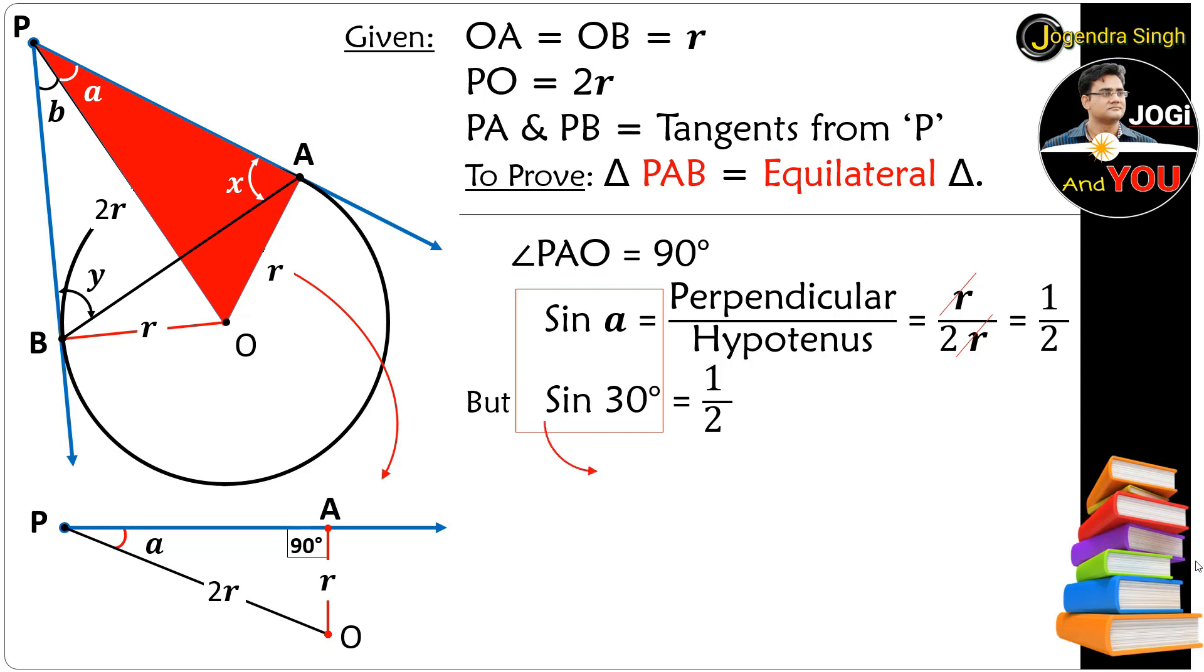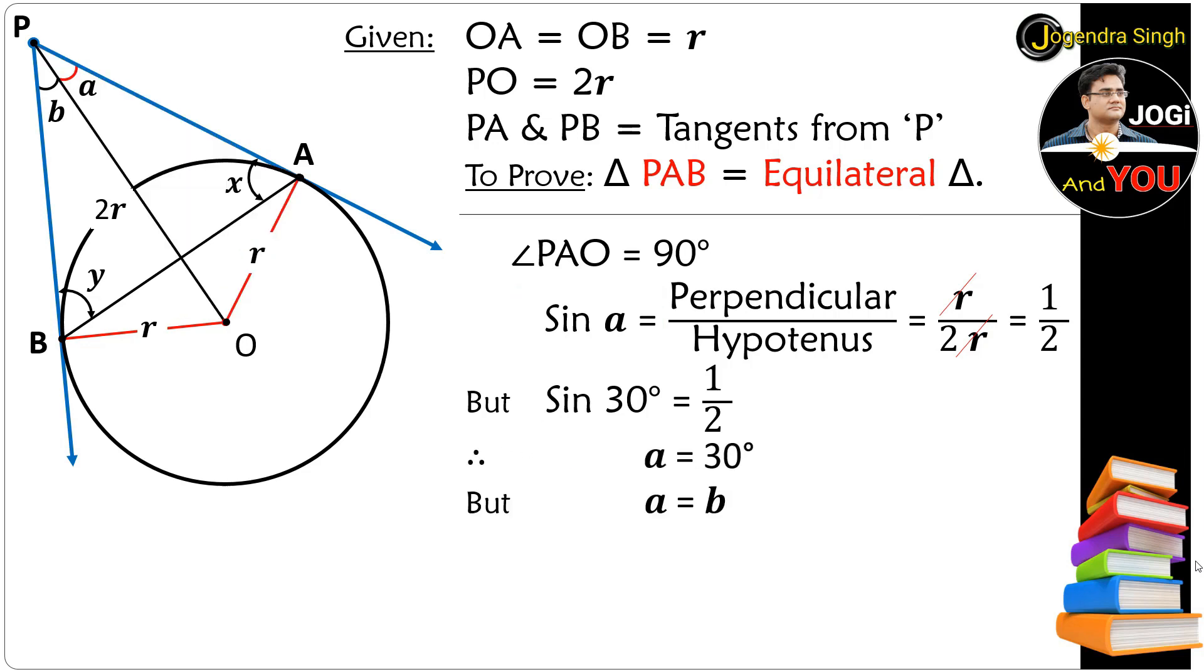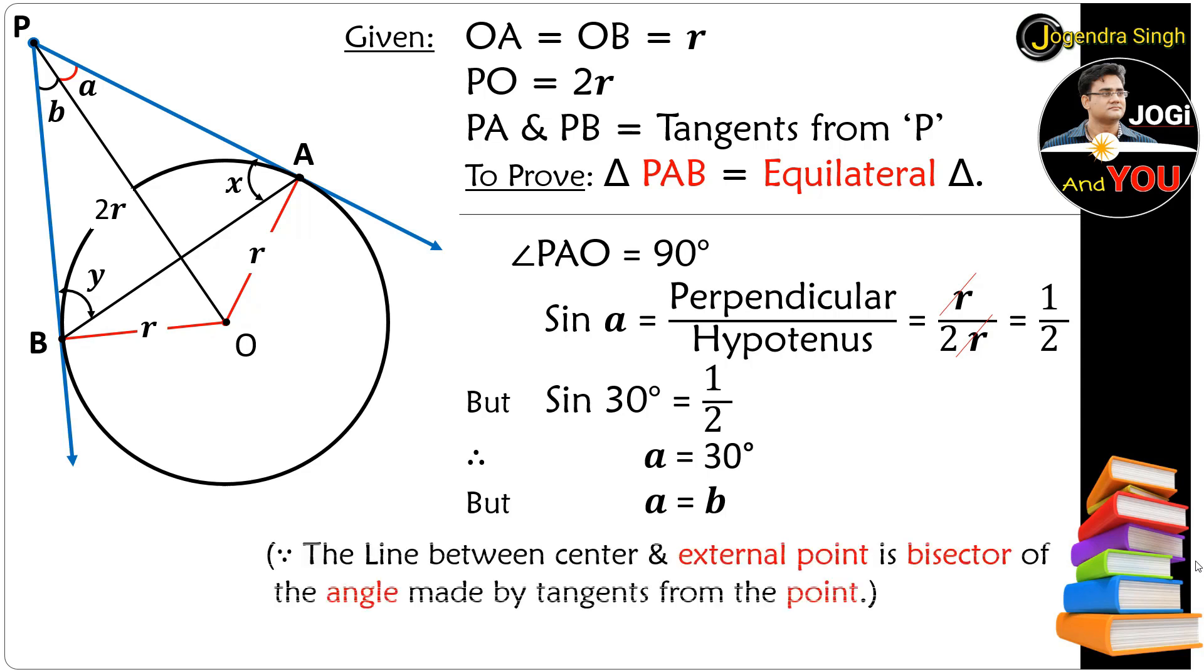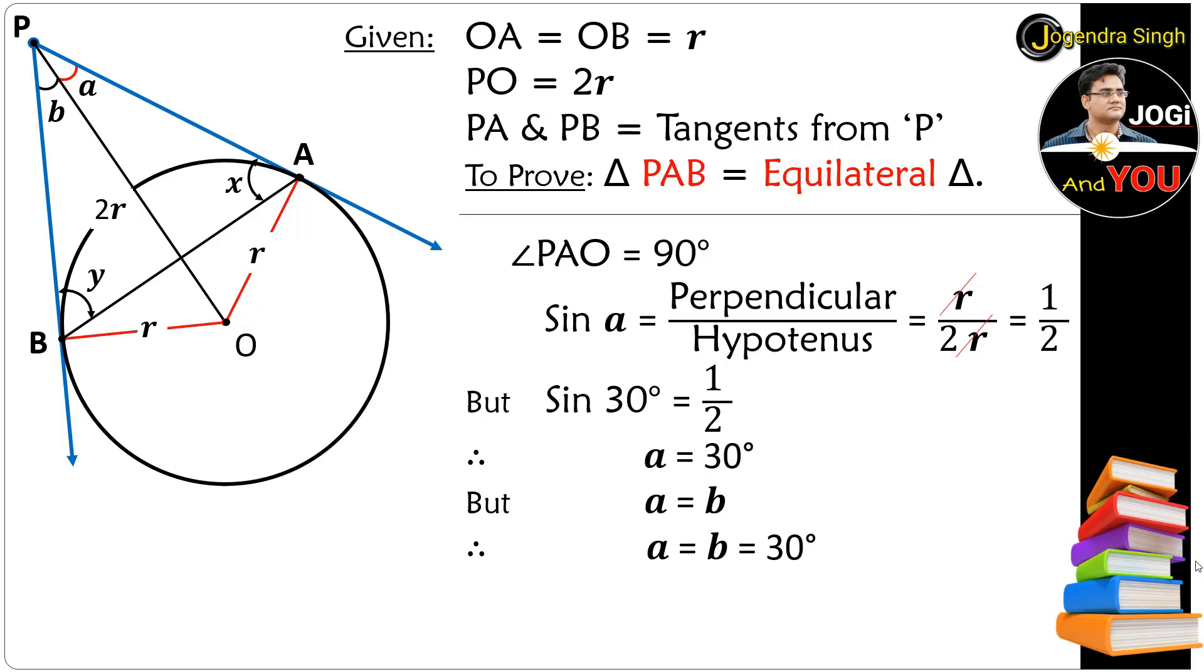But angle A is equal to angle B because the line between the center and external point is the bisector of the angle made by the tangents from the point. So both angles are equal to 30 degrees. That means A equals B equals 30 degrees. And now angle P becomes 60 degrees. This is our first equation.